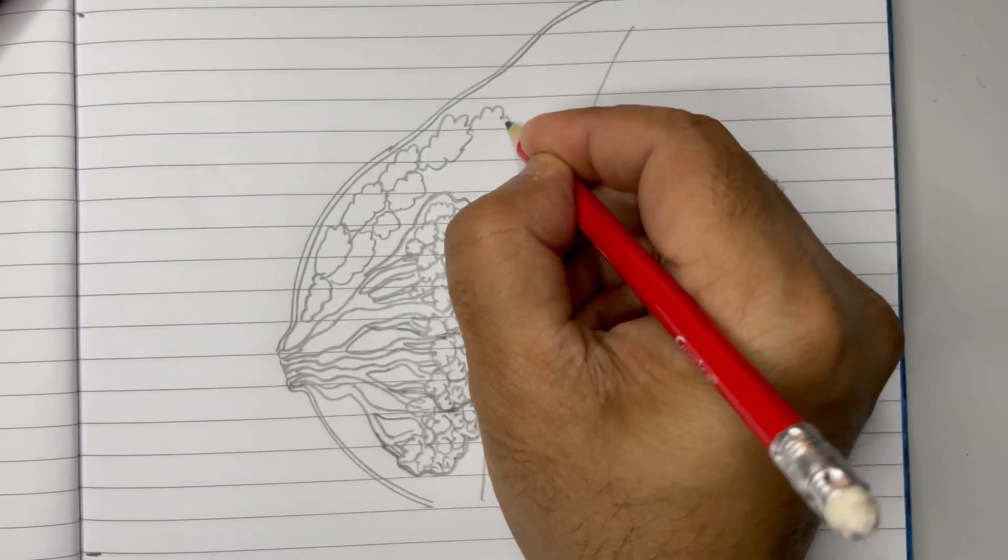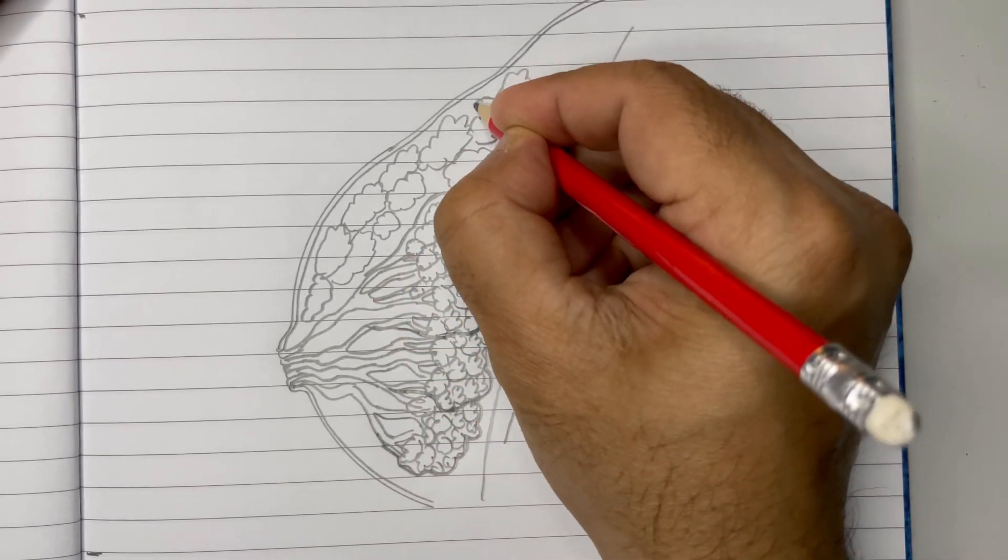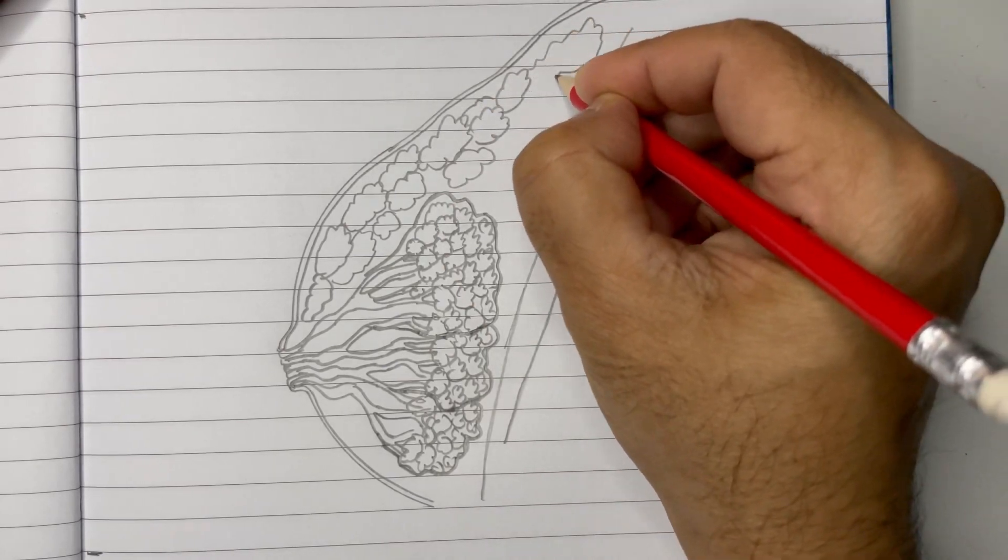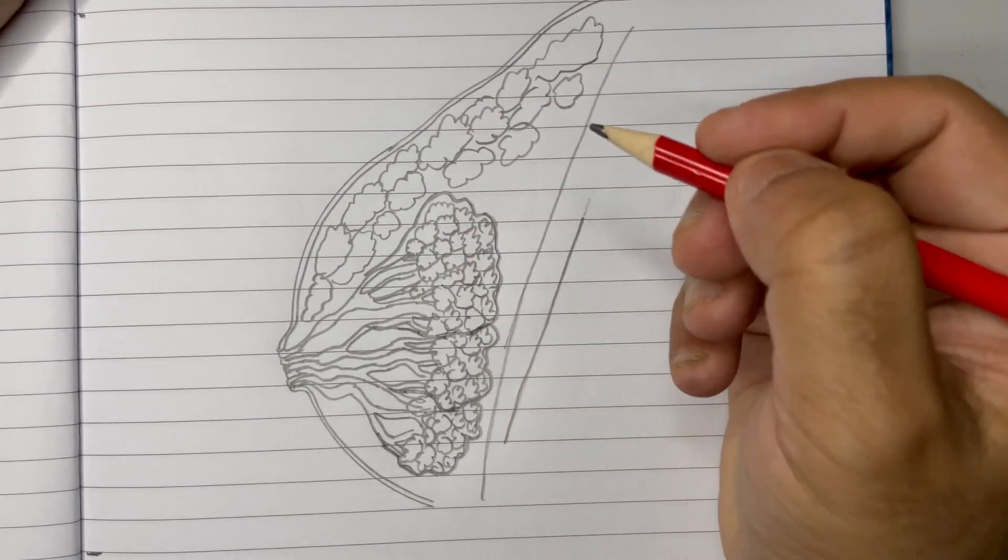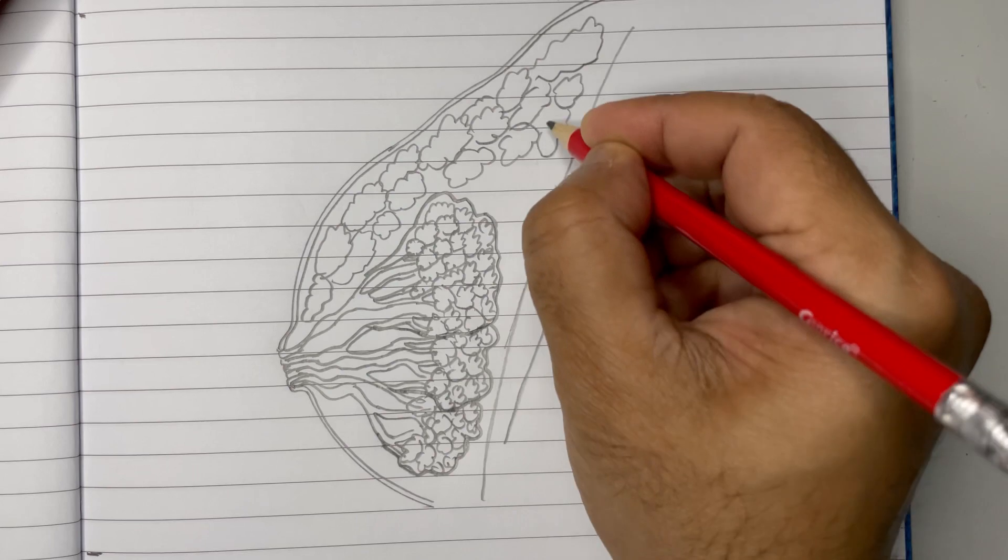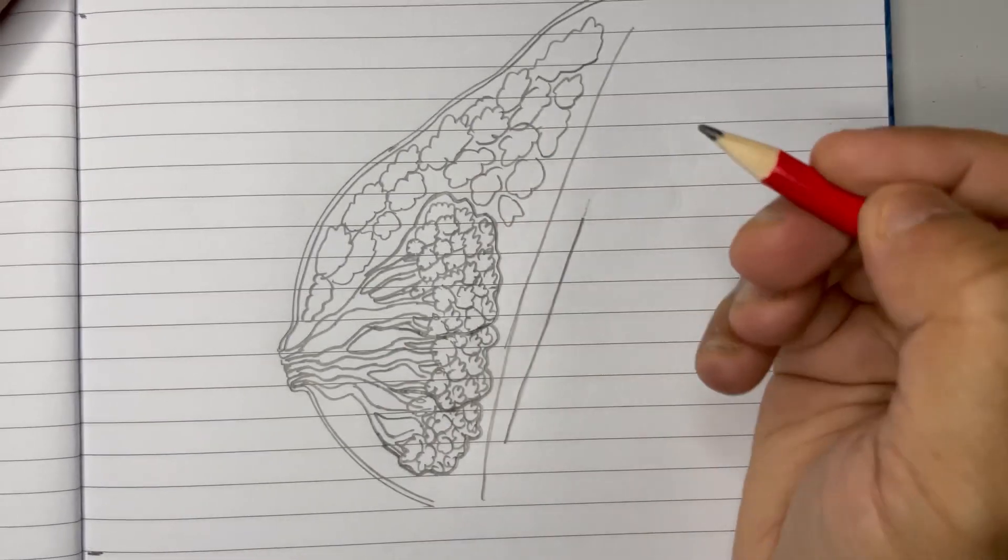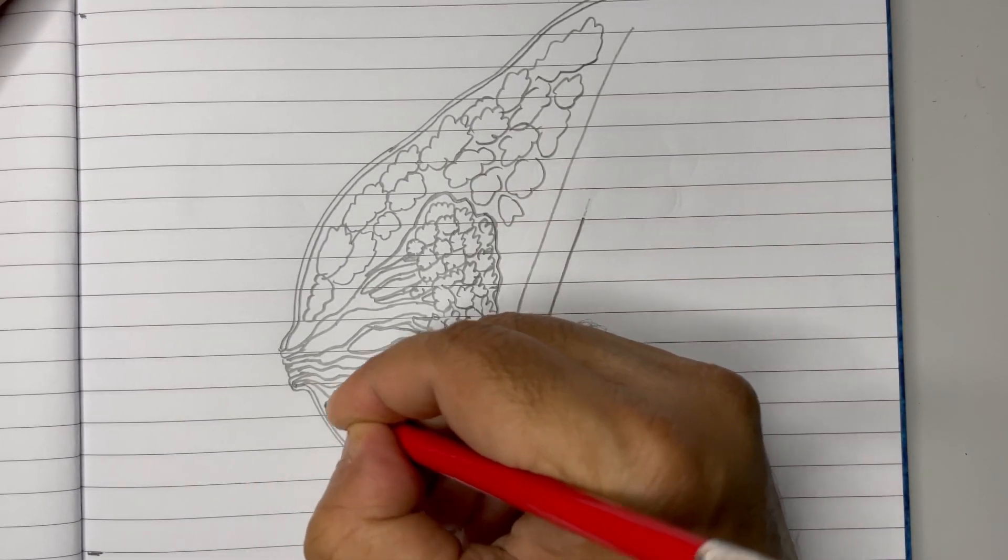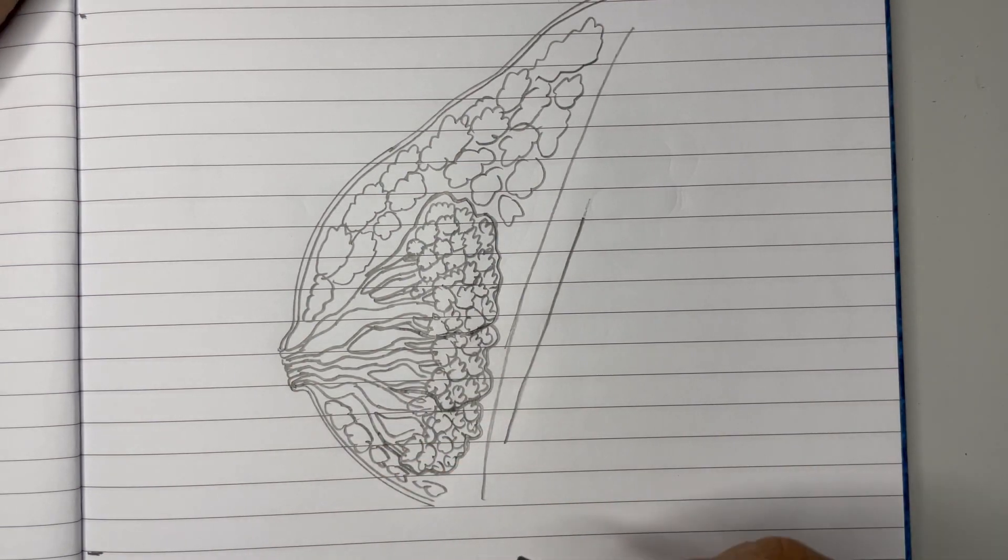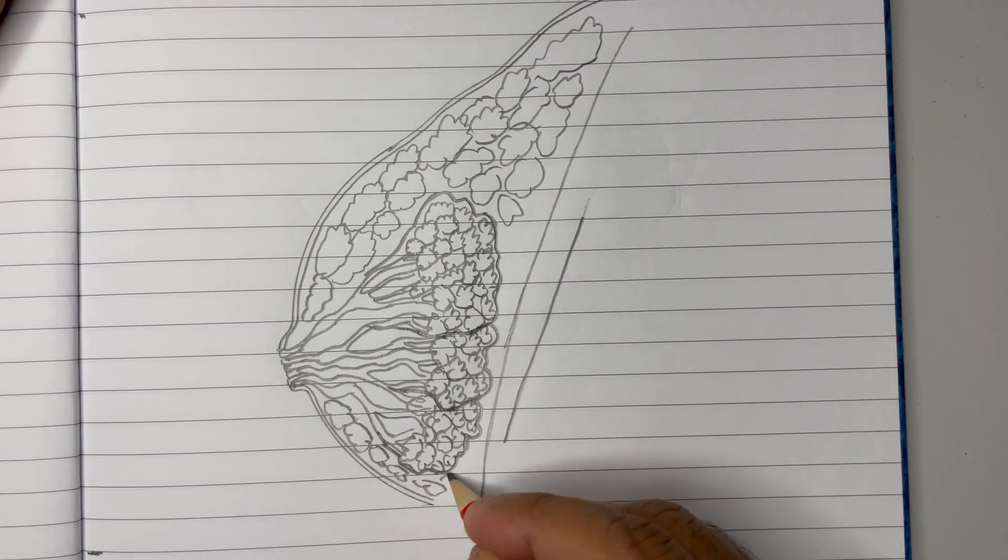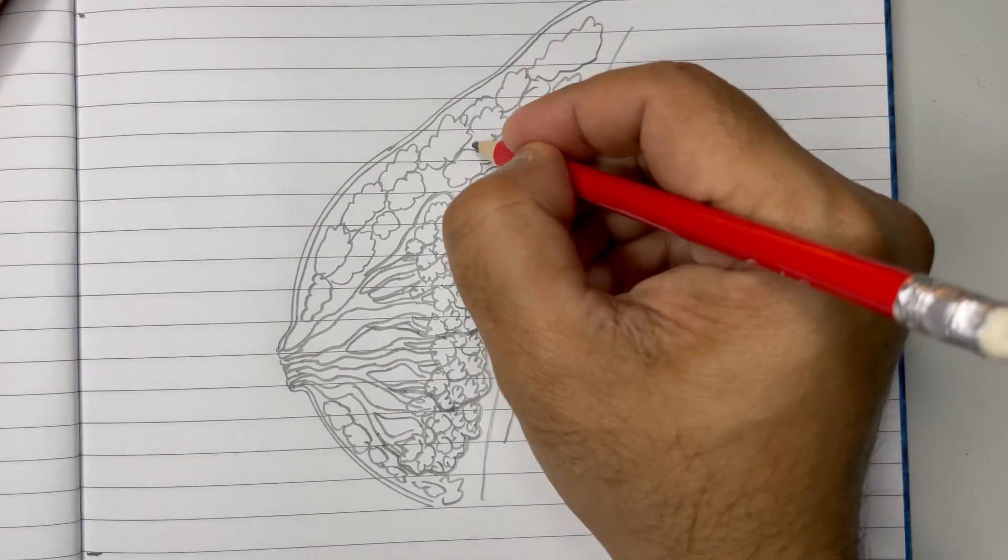You can extend the diagram like this. Now this all area other than the mammary lobes, we need to fill fat globules. Let's fill the fat globules over this side also. This is how fat globules are drawn.